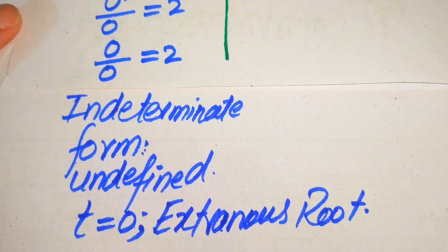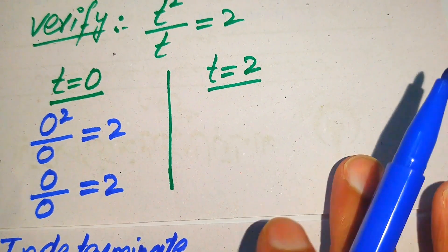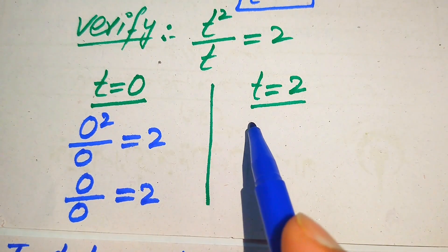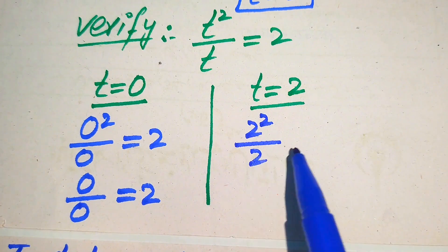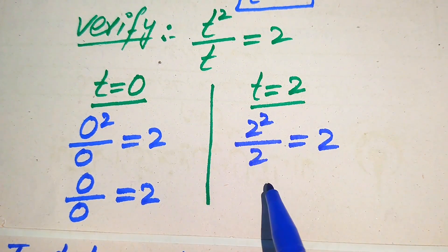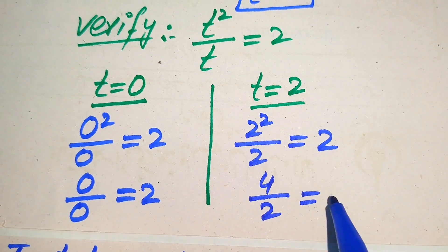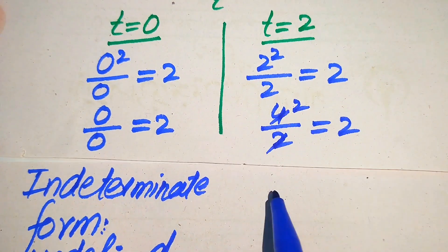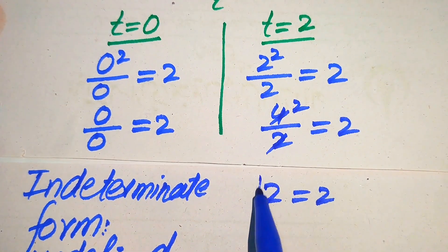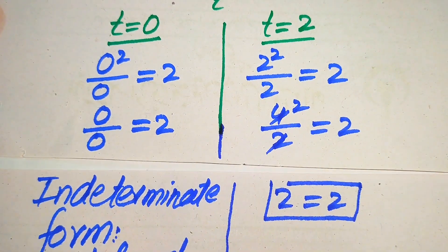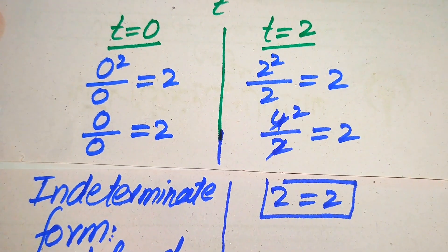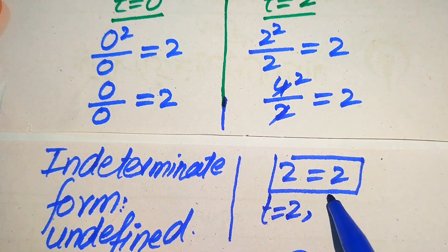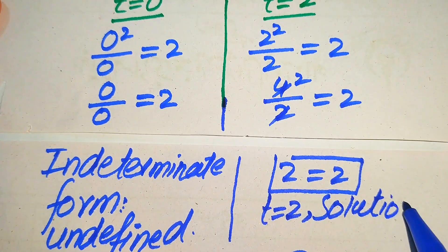Now for the second root, we substitute t equals 2 into the left-hand side: 2 squared divided by 2 equals 4 divided by 2, which equals 2. So we get 2 equals 2, which confirms that t equals 2 satisfies the given equation. Therefore, t equals 2 is the solution of the given equation.